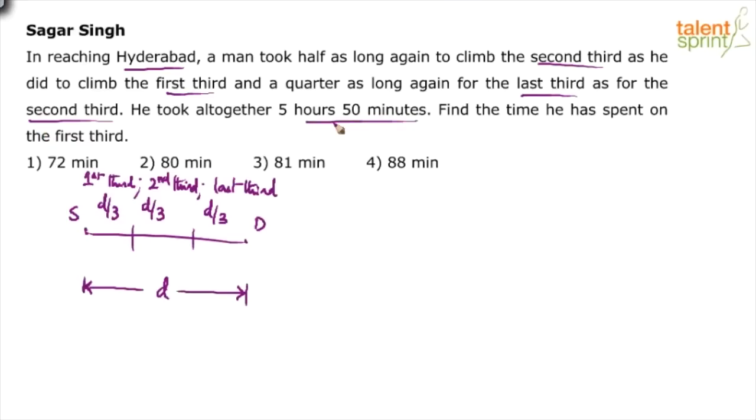Altogether he has taken five hours and 50 minutes. So let us assume for the first third, he has taken t minutes. How much time will he take for the second third? For the second third, he will take t plus t by 2. Half as long again to climb the second third. So half more than the original time. So t plus t by 2 is 3t by 2.